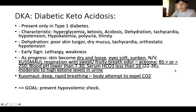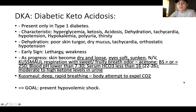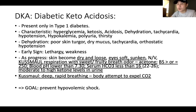DKA — diabetic ketoacidosis. DKA is only present in type 1 diabetes. Patients with type 2 diabetes do not have DKA. Whenever there is an exam question about DKA, immediately think type 1 diabetes — autoimmune disease.